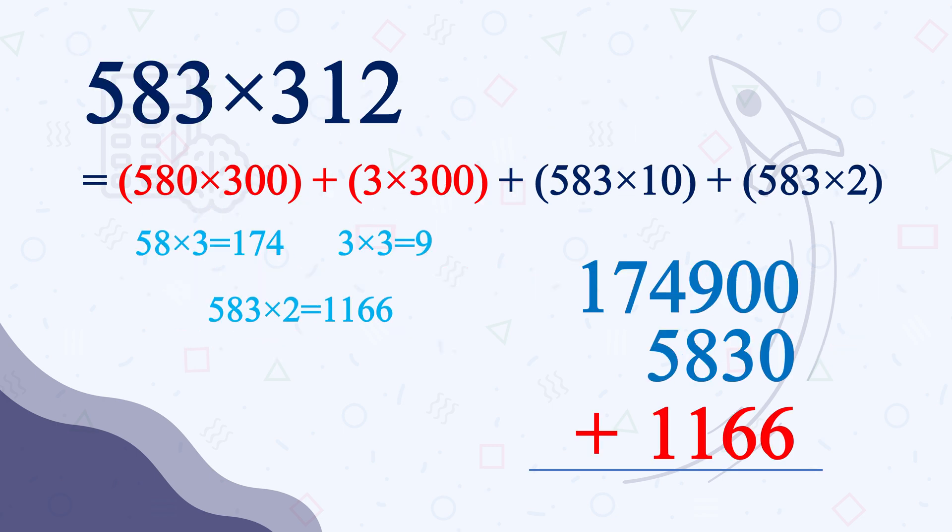58 times 3 is 174 and 3 times 3 is 9. So 174, 9, 0, 0 plus 5830 plus 1166 which is 2 times of 583.